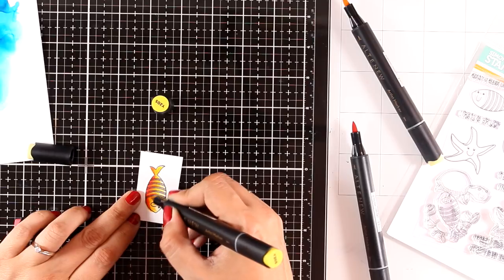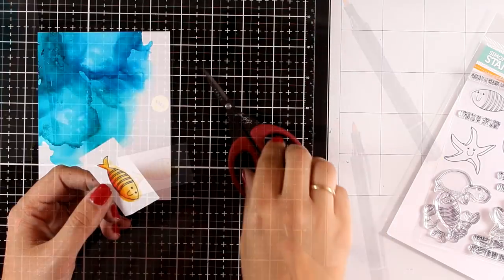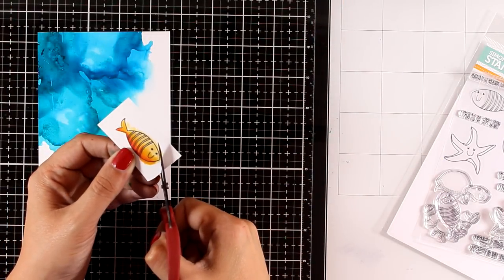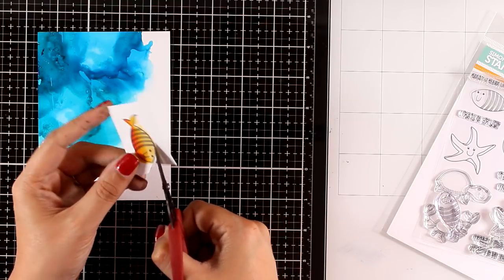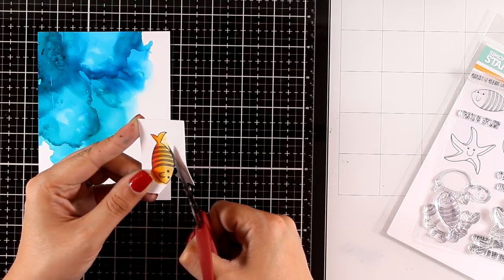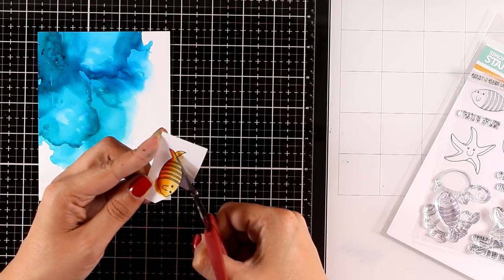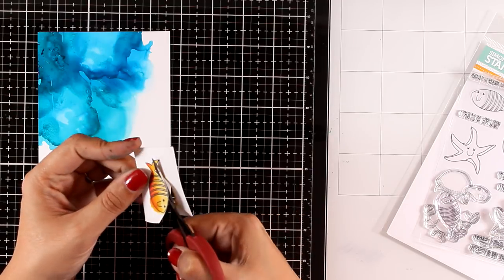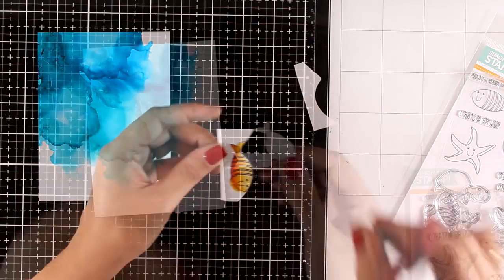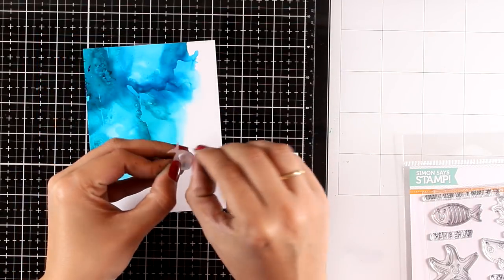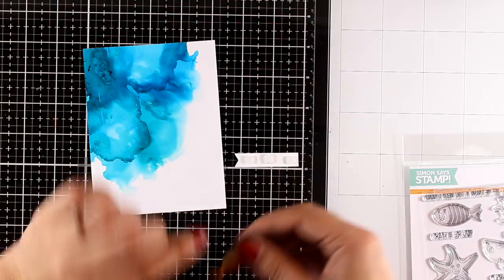Now I'm going to use my scissors and fussy cut this image. I'm cutting out exactly on the line so I don't get a white border around it. I don't know if there are actually matching dies for this stamp set. If there are, I'm going to make sure to link them down below in case you want to check them out.